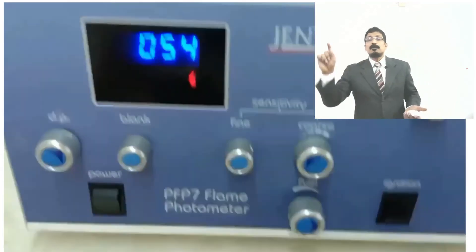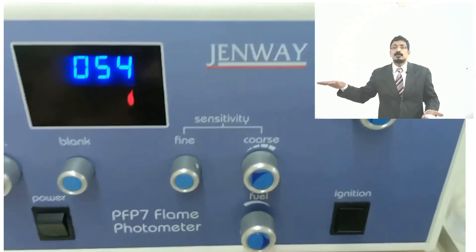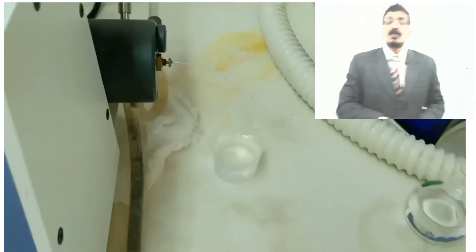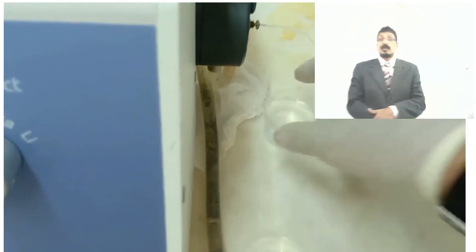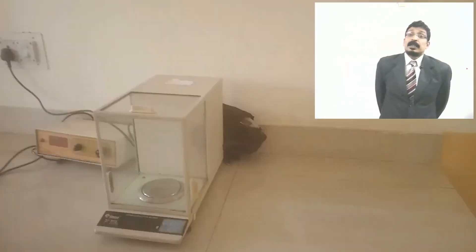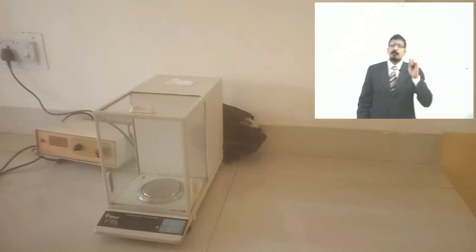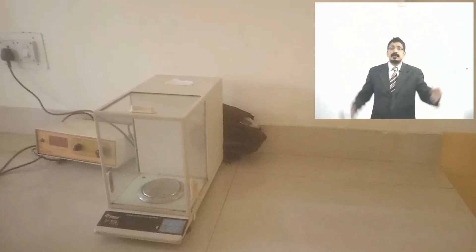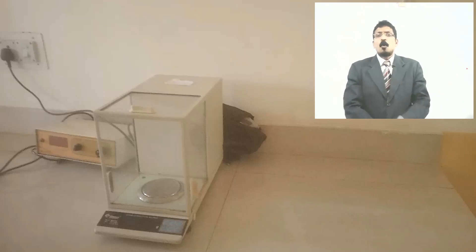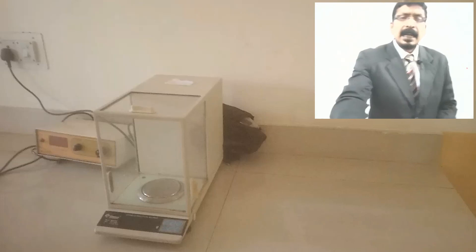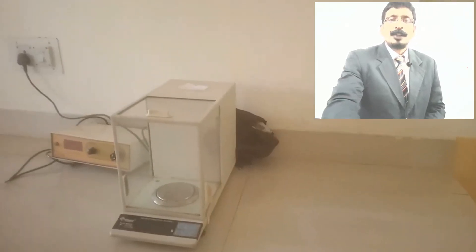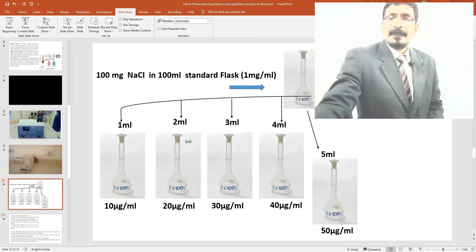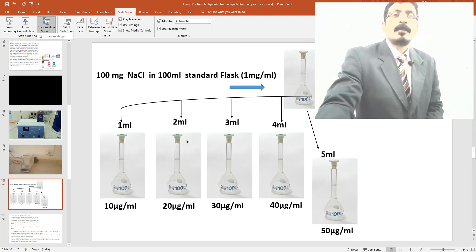Now about preparing dilutions — this is a very important factor in flame photometry. You need a digital analytical balance. Avoid air interference when weighing. Weigh accurately 100 mg of sodium chloride — since we are performing the sodium chloride experiment. This is the dried sodium chloride that you weigh, and then proceed to make dilutions.